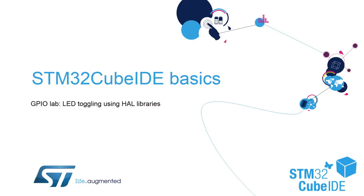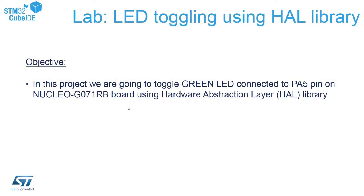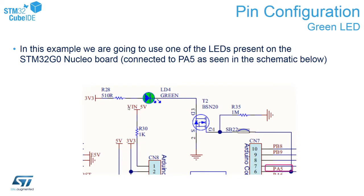In this video we will do the first hands-on. The objective of this lab is to create a project using STM32CubeMX and HAL libraries that will allow us to toggle the green LED connected to the PA5 pin on our Nucleo board. Here you can see the part of the Nucleo board schematic we are using in our exercise.